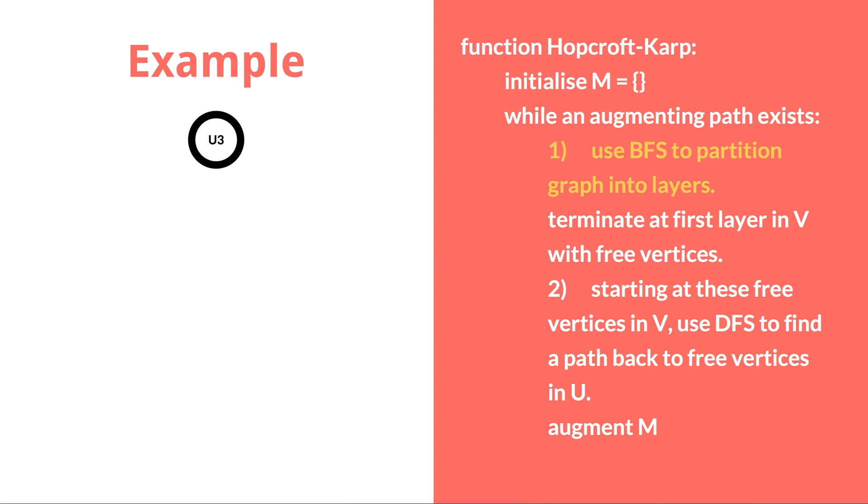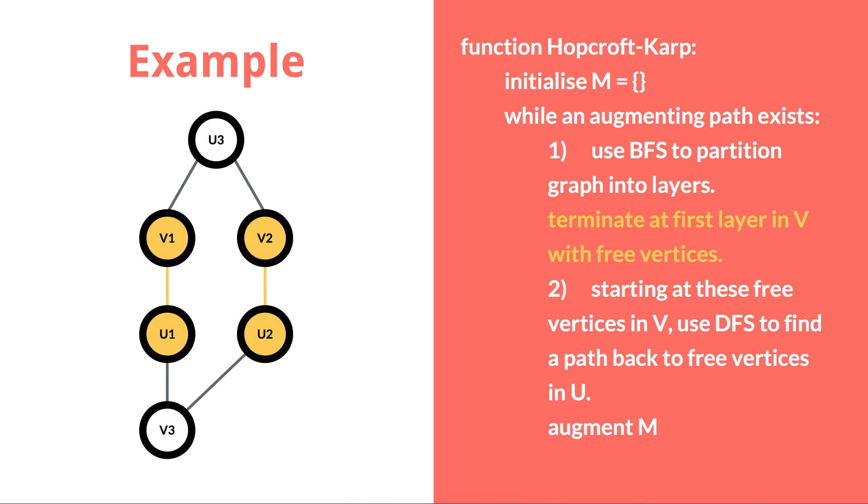In the second iteration, breadth-first search is started from node U3, the only remaining free node in U. It alternates between unmarked edges and marked edges, producing this tree.